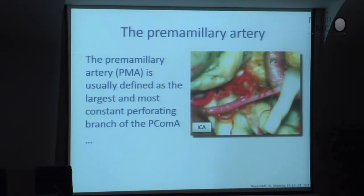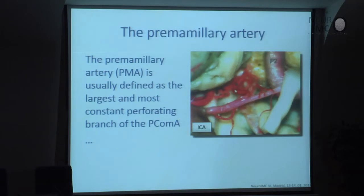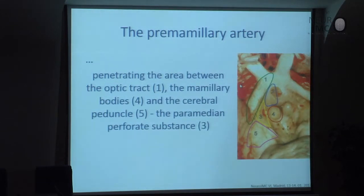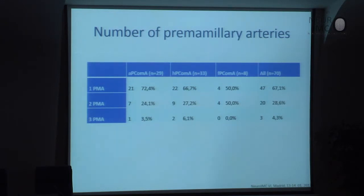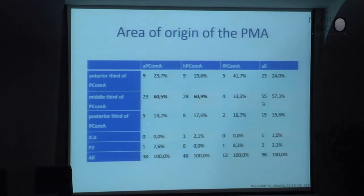Now I will go into more detail about the premammillary artery (PMA). The PMA is usually defined as the largest and most constant perforating branch of the PCOM artery. The PMA penetrates in the area between the optic tract, the mammillary bodies, and the pedunculus — this area is named the paramedian perforated substance, shown here with number three in yellow. Usually we have one premammillary artery, but the PMA can be two or even three in about 3–5% of cases. The PMA typically emerges in the middle third of the posterior communicating artery in 60% of cases, and only about 10–15% of PMA emerge from the posterior distal third.